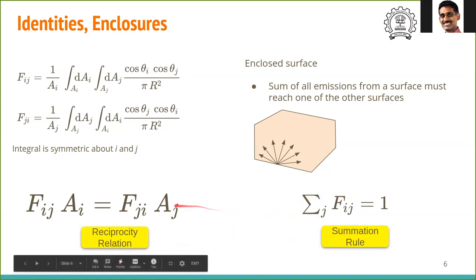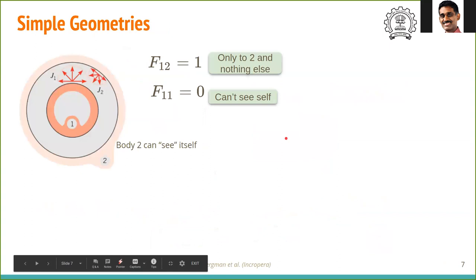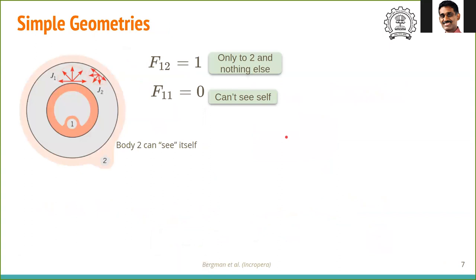There are two important relationships in view factor: the reciprocity rule and the summation rule. Calculating view factor for arbitrary geometries, even simple geometries, is very difficult — it is not a straightforward calculation. But we will show two simple calculations; for the rest, we will use standard tables and charts.